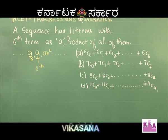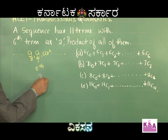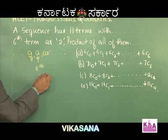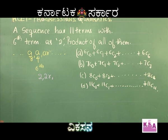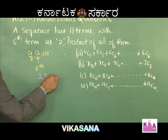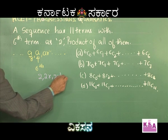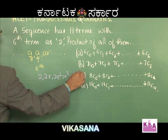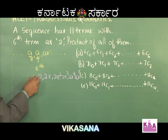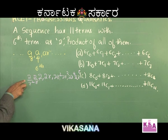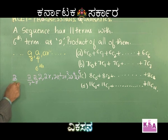Observe carefully: the 6th term is 2. The 7th term will be 2R, the 8th term is 2R², the 9th term is 2R³, the 10th is 2R⁴, and the 11th is 2R⁵. Going the other direction: the 5th term is 2/R, the 4th is 2/R², the 3rd is 2/R³, the 2nd is 2/R⁴, and the 1st term is 2/R⁵.